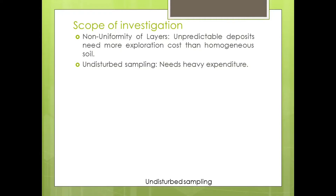Undisturbed sampling means that whatever samples you are extracting from below the ground, you must extract them in their natural state. If you excavate the soil using hands, it is not possible to extract the soil sample in its natural state — it will get disturbed. When you want to extract undisturbed samples from the strata, you will need sophisticated equipment, machinery, skilled laborers, and the cost of all these resources is obviously high.